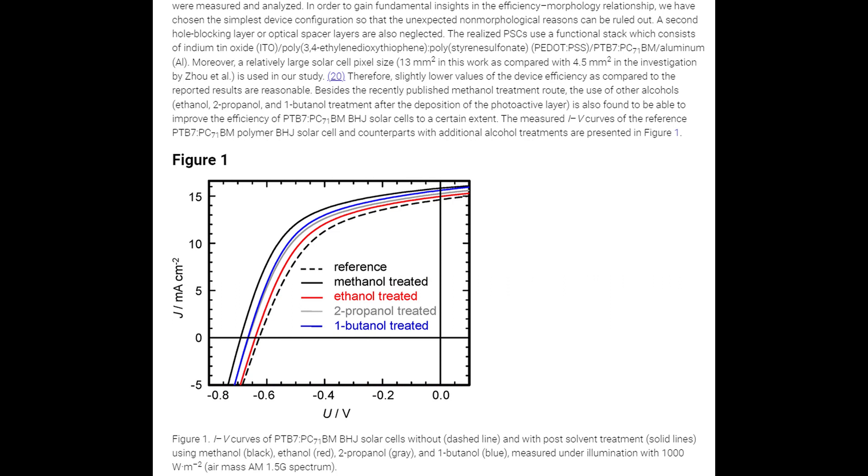Moreover, a relatively large solar cell pixel size is used in this study. I think it's the solar cell high-efficiency polymer solar cells. It says here more than 200 individual devices were fabricated and the I-V witnesses of these devices were measured and analyzed.